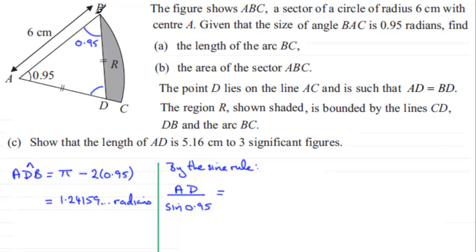...comparing another side, in this case 6, with the sine of its opposite angle which is the one ADB, the one we've just found here. So it'll be the sine of 1.24159 and so on.